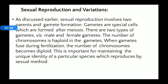Sexual reproduction is a process by which two parents produce gametes, and by the fusion of male and female gametes it leads to the formation of offspring. In sexual reproduction, two parents are involved, and gamete formation and gamete fusion takes place. Gametes are the special cells which are formed after meiosis.